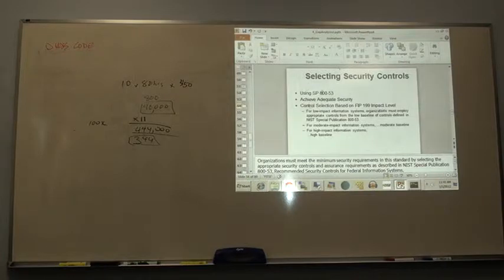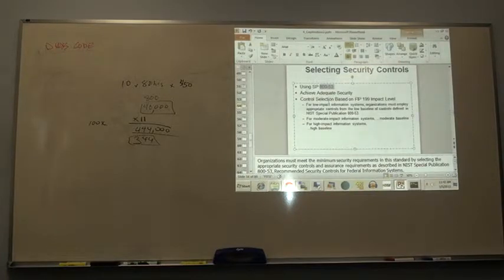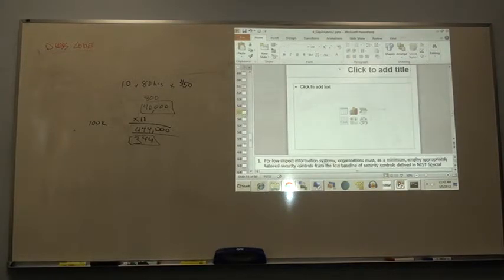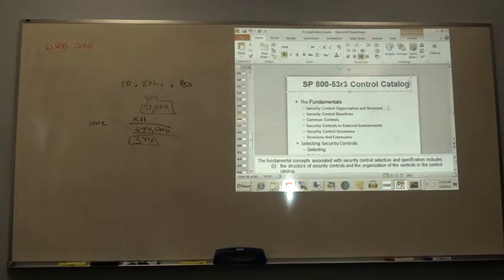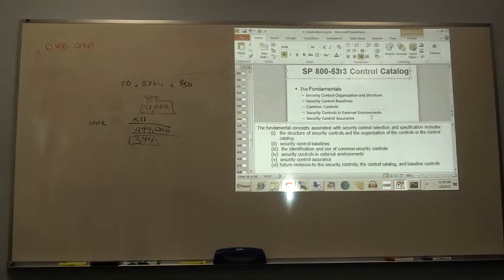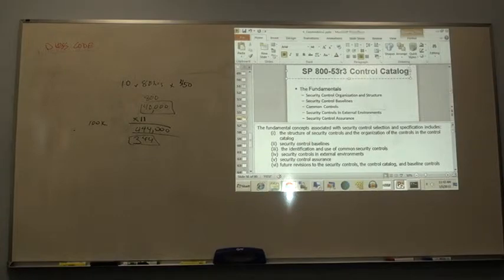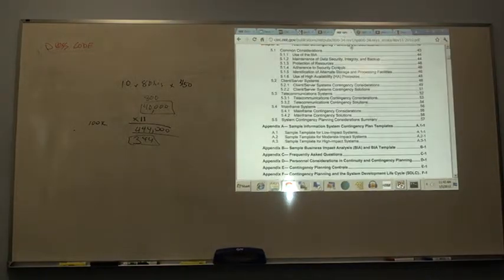For selecting the security control, it's going to be 853. That's the FIPS. That's actually FIPS. And the 853 Rev 3 control catalog. What's that? I think is what we were looking at earlier. Make sure it's the right document.